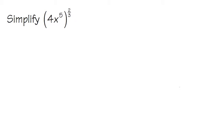Here we are going to simplify (4x^5)^(2/3). So we are going to change this into the radical notation first.